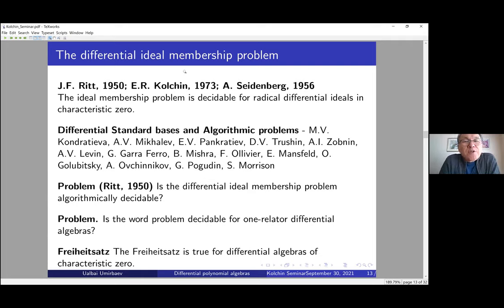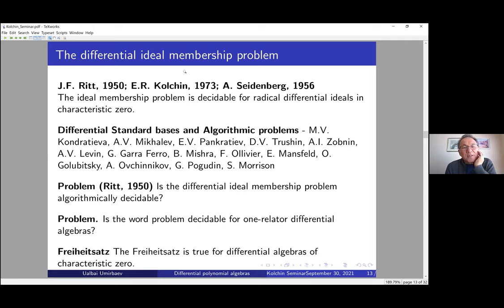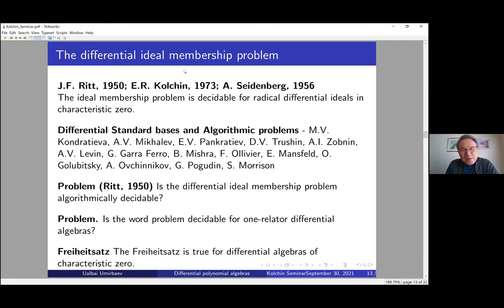An important corollary of the Ritt-Raudenbush theorem is that the ideal membership problem for radical differential ideals in characteristic zero is algorithmically decidable. This problem was initiated by Ritt and then Kolchin; Seidenberg completed the result in good form. There are also differential standard bases, analogs of Gröbner bases, and algorithmic problems studied by several authors. I list some of them here, though I may not know all of them.